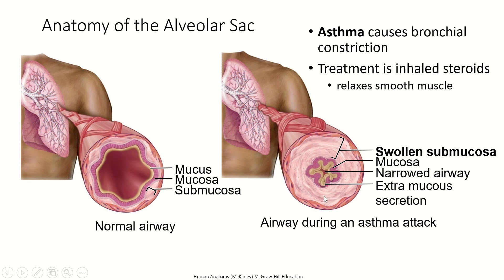When the smooth muscle around the bronchioles constricts and the lining of the bronchiole becomes swollen and inflamed, that's what an asthma attack is. So asthma actually causes bronchial constriction. The swelling of this layer — we call it the submucosa. The inner layer is the mucosa, which makes the mucus. The submucosa, if it gets swollen and inflamed, is going to make the airway smaller. The bronchioles are the only parts affected by asthma. The bronchi are held open by cartilage — they can't narrow.